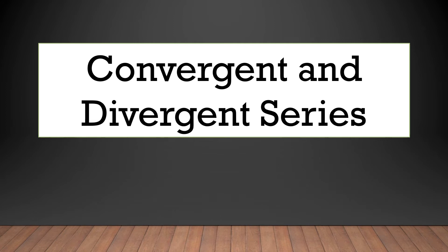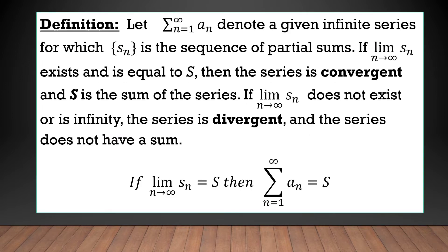For today's video, we are going to discuss how to determine if a series converges or diverges. Let the summation of a_n denote a given infinite series for which S_n is the sequence of partial sums. If the limit of S_n as n approaches positive infinity exists and is equal to S, then the series is convergent and S is the sum of the series. If the limit of S_n does not exist or is infinity, the series is divergent and does not have a sum.